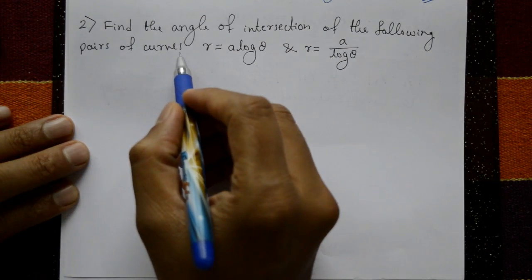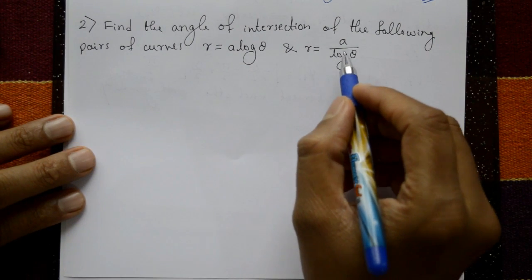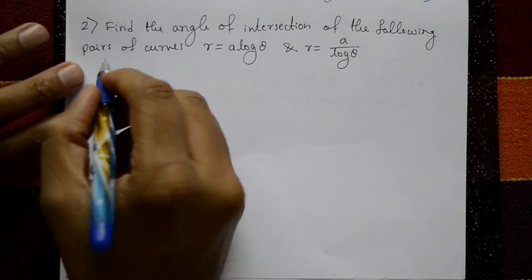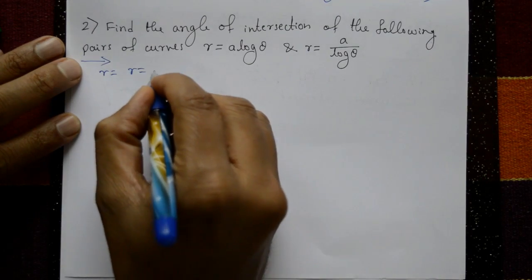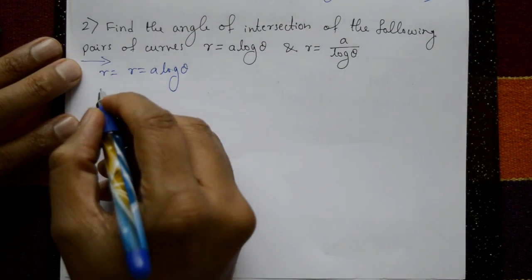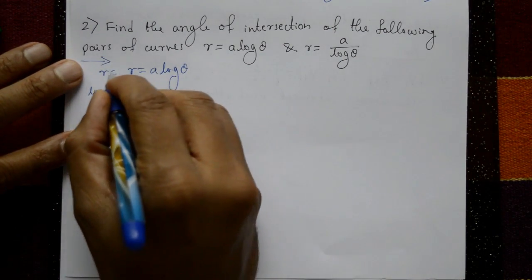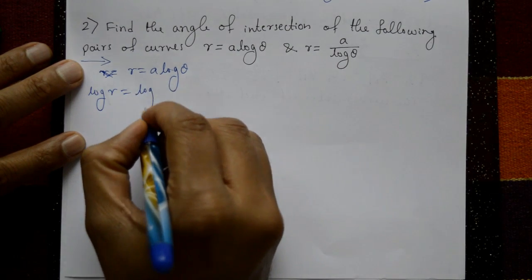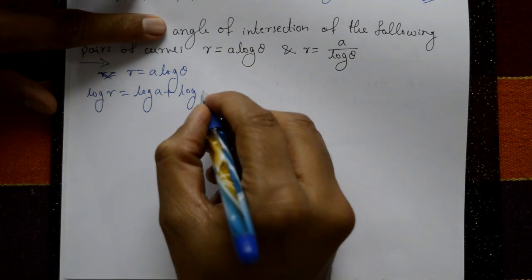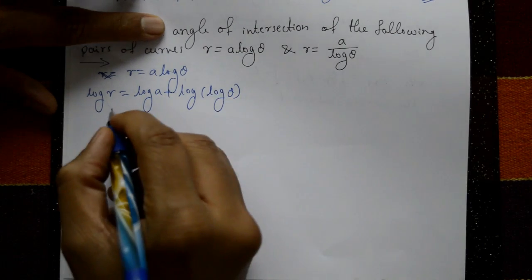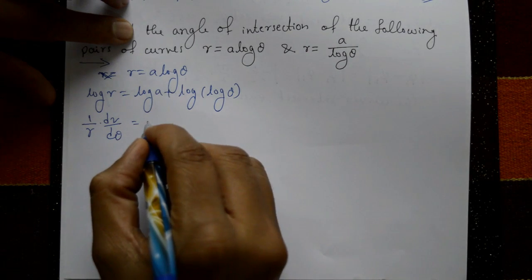Find the angle of intersection of the curves r = a·logθ and r = a/logθ. For the first curve, taking log on both sides: log r = log a + log(logθ). Differentiating with respect to θ: (1/r)(dr/dθ), and log a differentiates to 0.